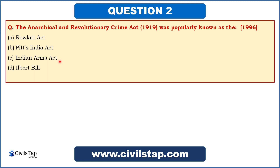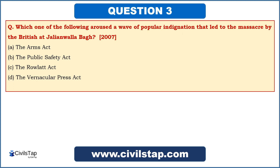We have already studied that the Anarchical and Revolutionary Crime Act 1919 was the Rowlett Act, so that is the answer. Now let's move to the next question. This question came in the prelims of 2007: 'Which one of the following aroused a wave of popular indignation that led to the massacre by the British at Jallianwala Bagh?' Options are: the Arms Act, the Public Safety Act, the Rowlett Act, and the Vernacular Press Act.